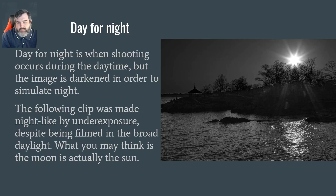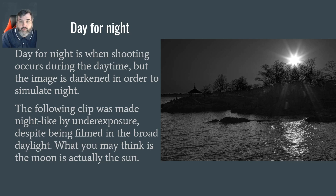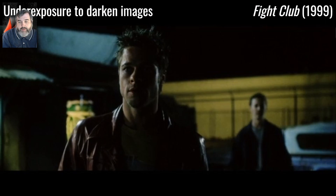Day-for-night is an interesting technique where shooting occurs during the daytime but the image is darkened in order to simulate night. The following clip was made night-like by under-exposure, despite being filmed in broad daylight. What you might think is the moon is actually the sun — they under-exposed the film in order to make it look like night. Here's an example of under-exposure from Fight Club in 1999 to achieve that effect.